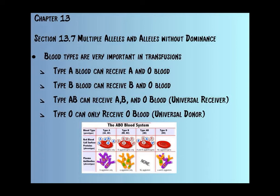Here's how the transfusion works. If you have type A blood, you can receive A or O. We like to call O the universal donor — anybody can get type O blood. So if you were a blood bank, you'd want type O on hand because you could give that to anybody. Type AB blood can receive A, B, and O, which is kind of nice. Type AB blood is the universal receiver.